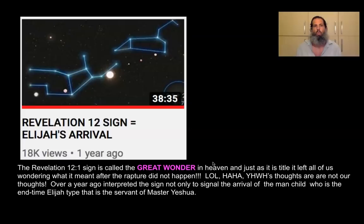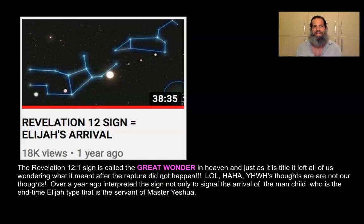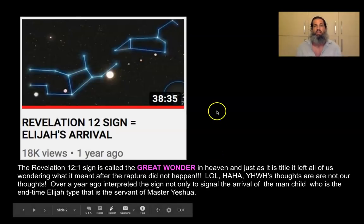The Revelation 12 sign was called a great wonder in heaven, and after the rapture didn't happen, it left us all wondering. But about a year ago, I gave an interpretation that this sign signaled the arrival of the man-child, who is the end-time Elijah type and servant of Master Yeshua the Messiah.